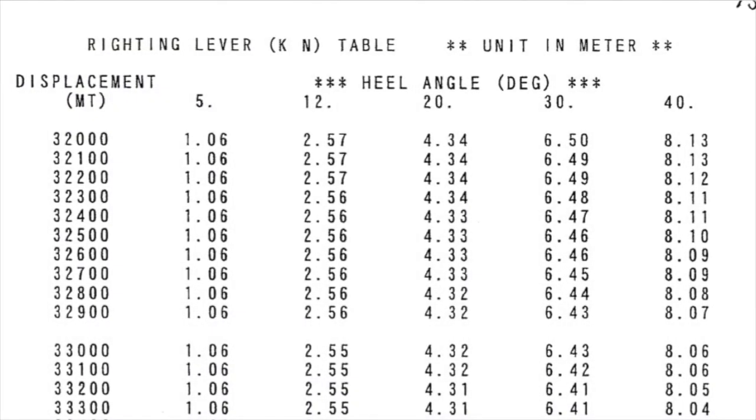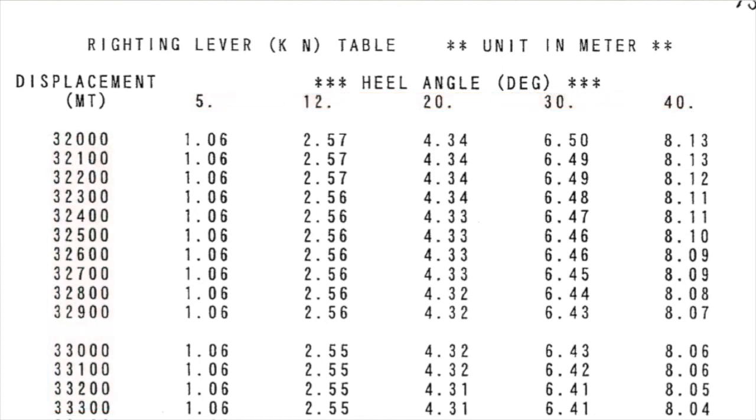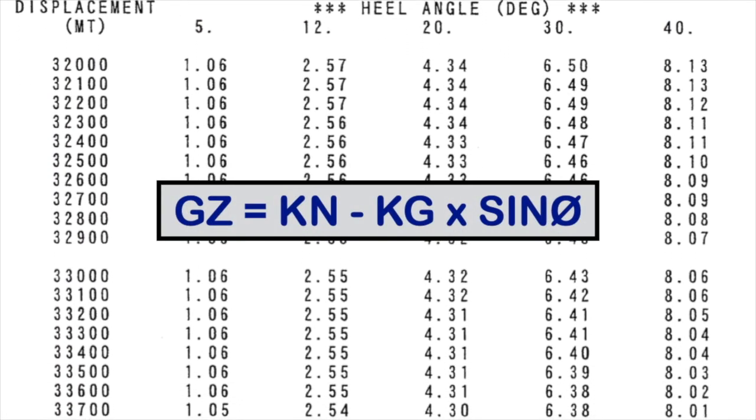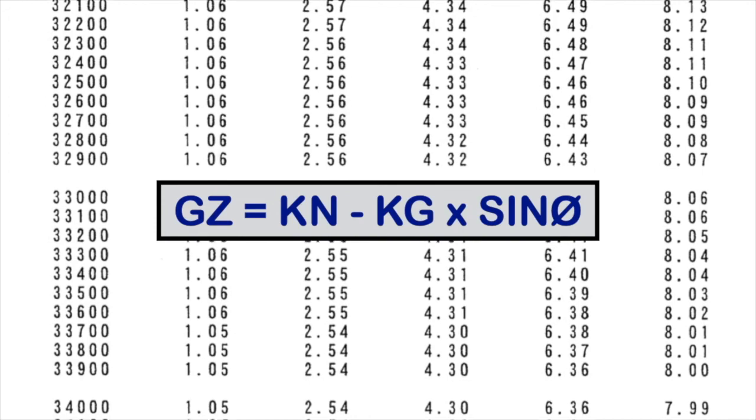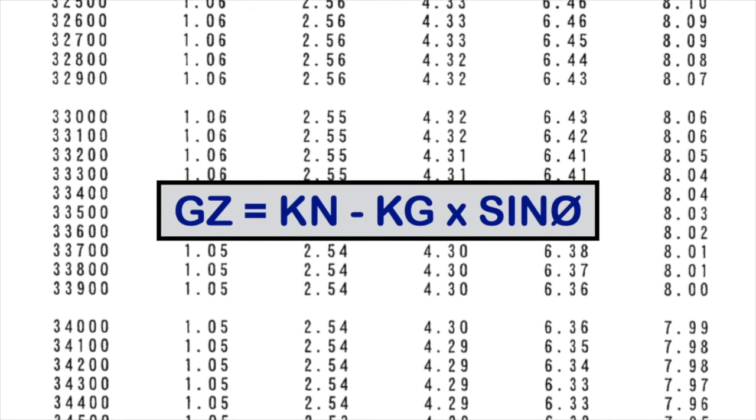That's why most stability books will include a table of KN values. These values are given for the ship at various displacements and various angles of heel. By using these table values and the formula to find GZ, you can quickly determine the righting lever for any center of gravity and any angle of heel. The versatility of KN values is why they are commonly found in stability booklets and used in statical stability calculations.